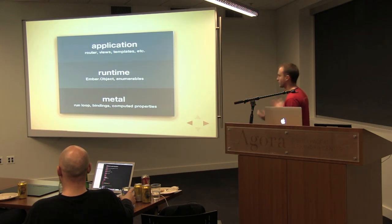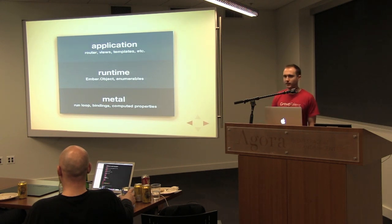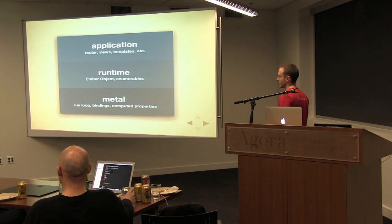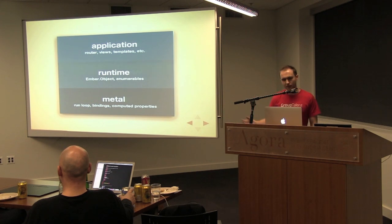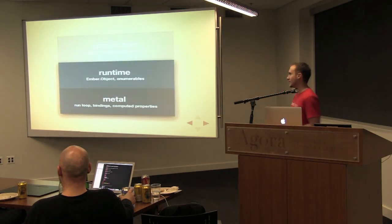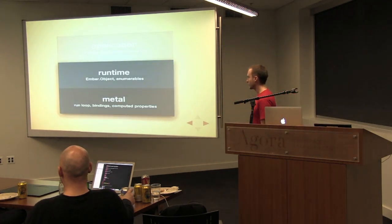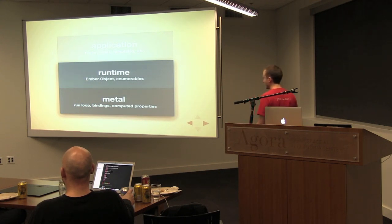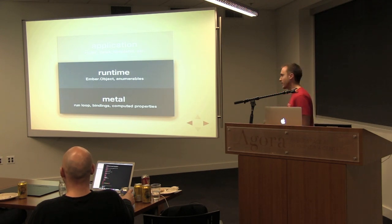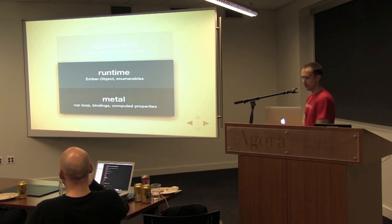At the bottom, there's what's called Metal, which has bindings, computed properties, and the run loop. Above that, there's the object model and enumerables. And at the very top level, there are modules for the router, views, Handlebars integration, and templates. For the purpose of this talk and just Emberscript, it's just the bottom two layers. What's nice about this is it's actually a much smaller footprint. Emberscript doesn't depend on all of Ember.js — just these two modules.